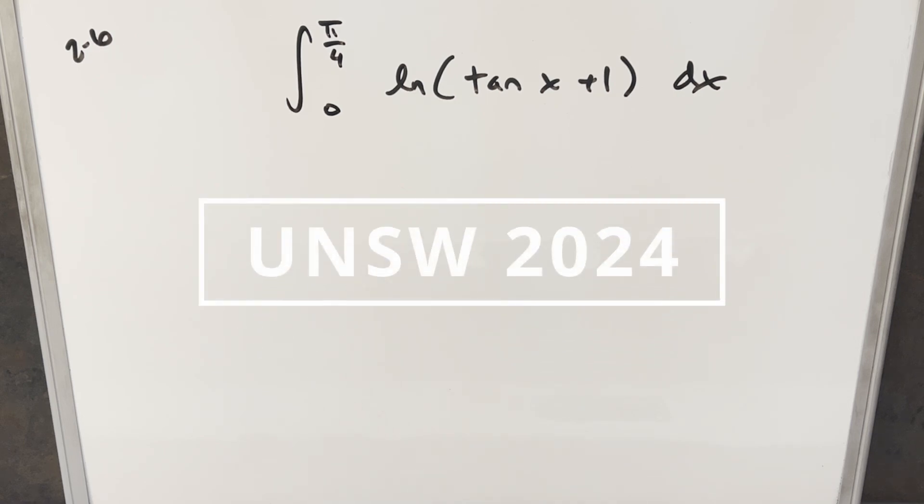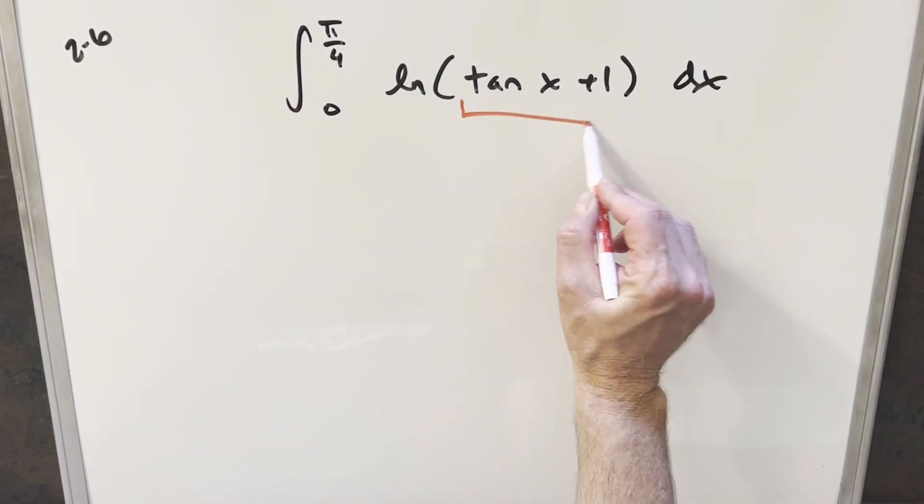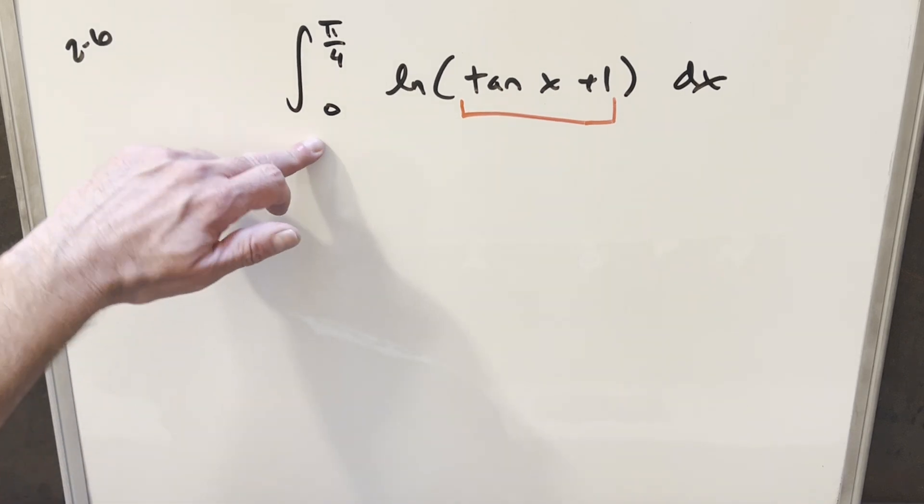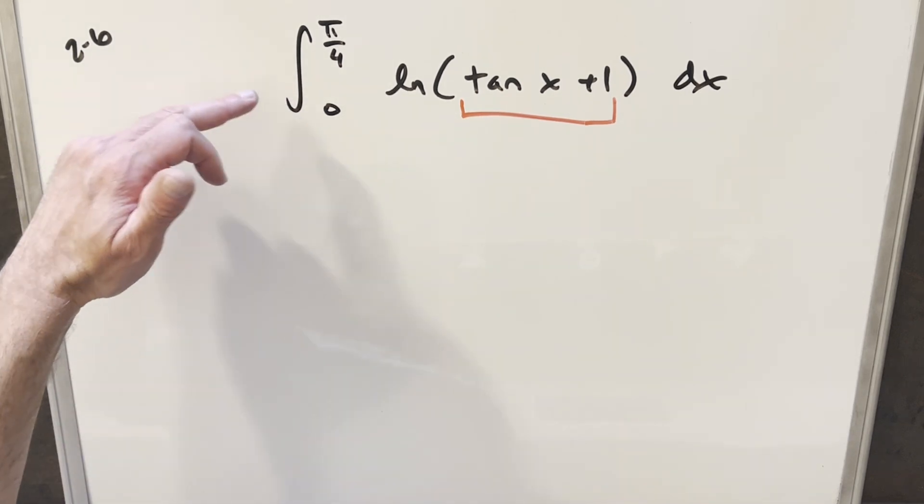We have our tan integral from the UNSW integration B2024. This was round two, problem six. We have the integral from zero to pi over four, natural log tan x plus one dx. This one looks pretty tricky. This is not a great situation to have tan x plus one inside the natural log. But I do notice we have the bounds going from zero to pi over four.